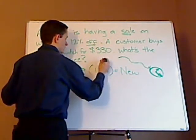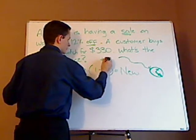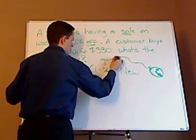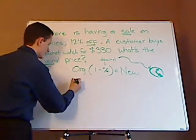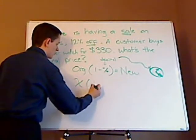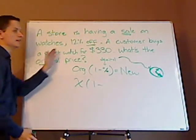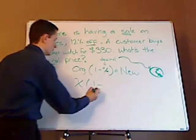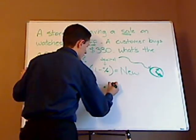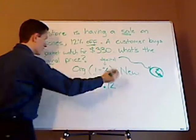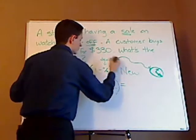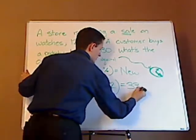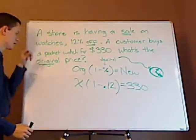One minus the percentage equals the new. And remember, you have to change this percentage to a decimal. Alright, so you don't know the original price, so that's your X. The percentage is 12, so it's 0.12. You just shift it over two places. The new value you're given, which is 330.